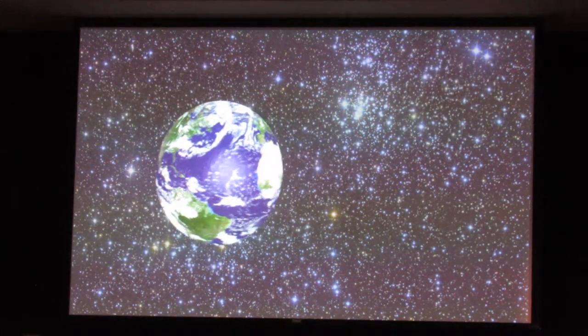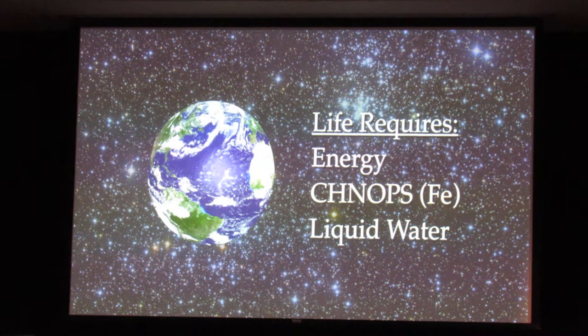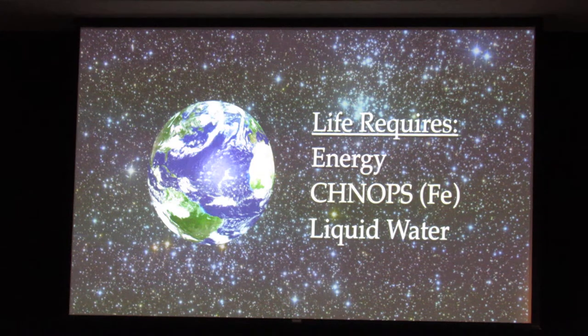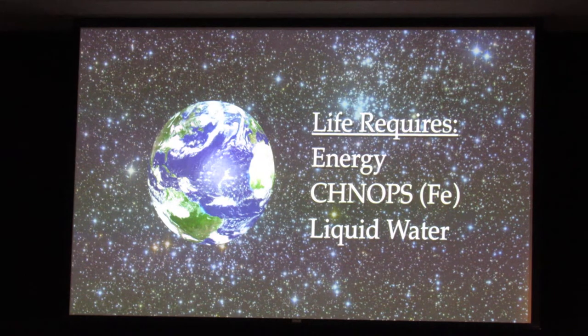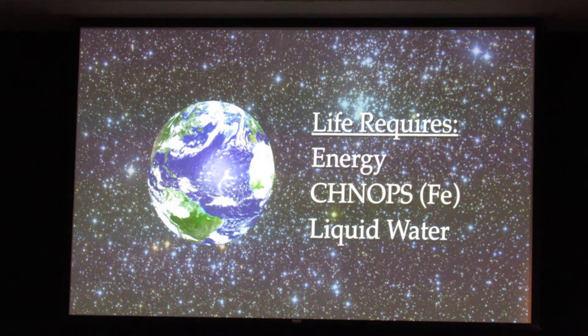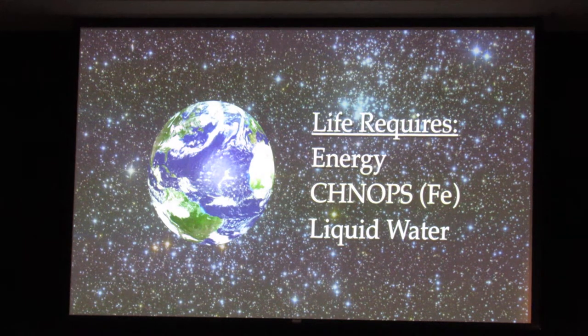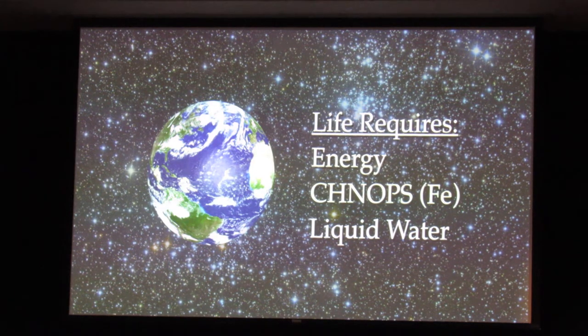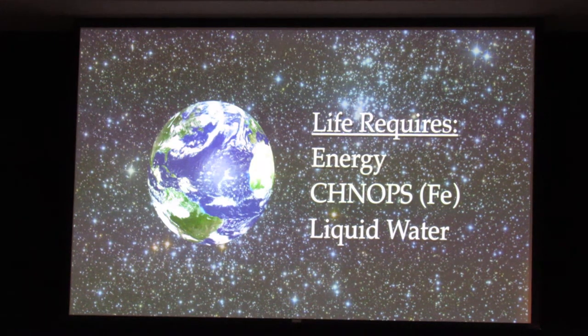Despite this diversity of life on our planet, there are some commonalities. In particular, there are three features of all life on our planet that are consistent. Every single organism on our planet requires energy to grow, thrive, survive, and reproduce. They also all require a set of elements that we call the bioessential elements. If you remember your periodic table, these are carbon, hydrogen, nitrogen, oxygen, phosphorus, and sulfur. I've put iron as Fe in parentheses because there has been a claim that there is one organism that does not require iron. But it's controversial—probably iron is a bioessential element, meaning every single organism needs that for life.